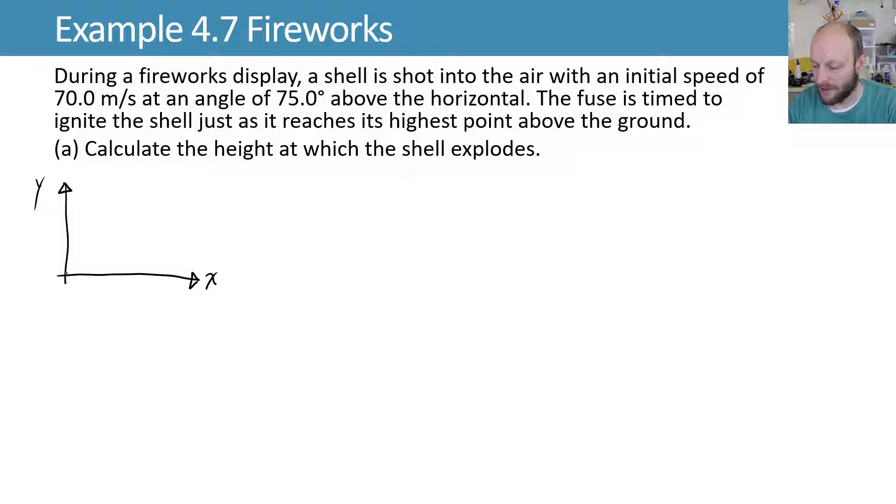So we'll have some initial velocity here that's equal to that 70 meters per second, and we can split that into x and y components. We'll have an x component here, vx, that should be equal to whatever the magnitude of that initial velocity is, times the cosine of the angle that we make with the x-axis. So if we have some angle here, theta of 75 degrees,